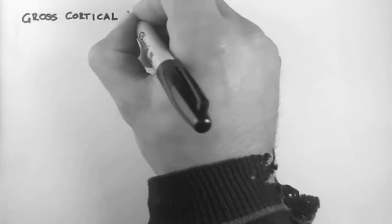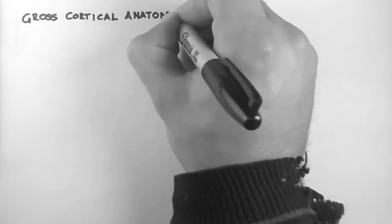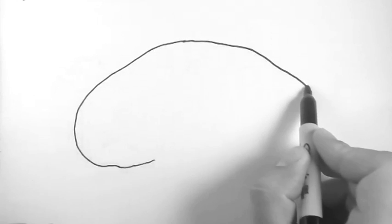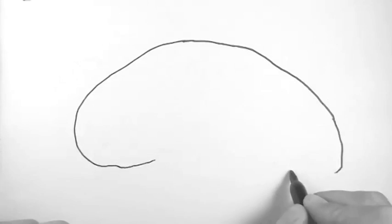Hi, in this video I'm going to talk about the gross cortical anatomy of the brain. So we're going to be looking at the brain from its lateral aspect. So I'll just draw it up here.